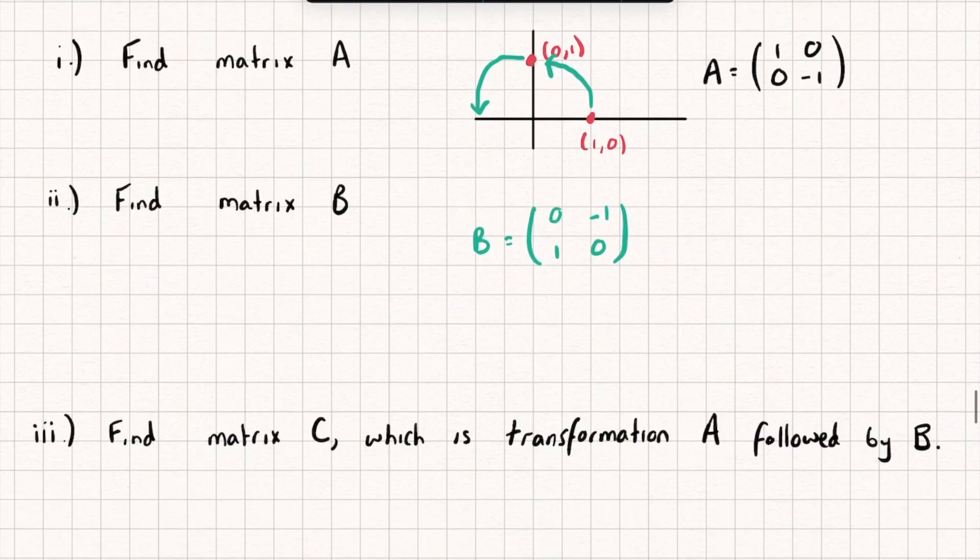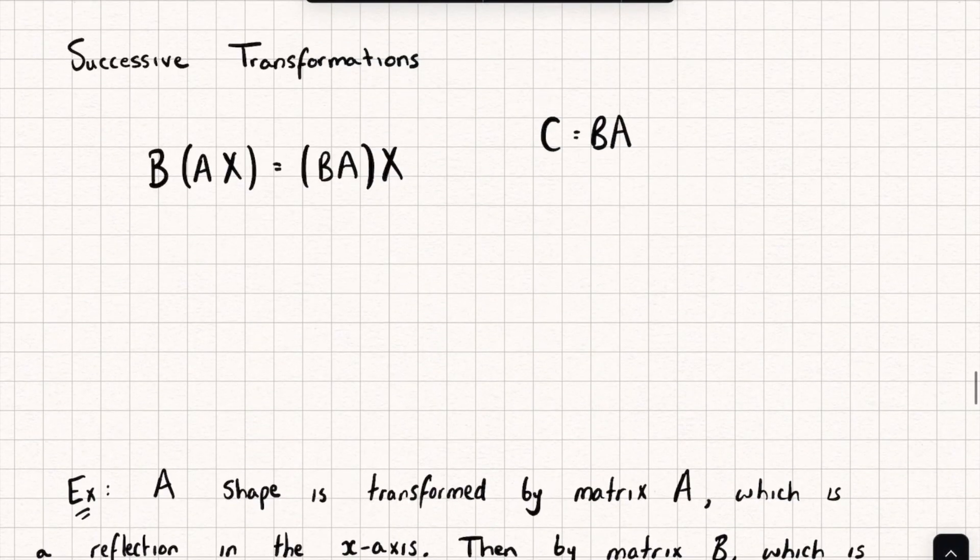Okay. Part 3 says find the matrix C, which is a transformation of A followed by B. Now a common mistake might be to do A multiplied by B, but if we go back up,